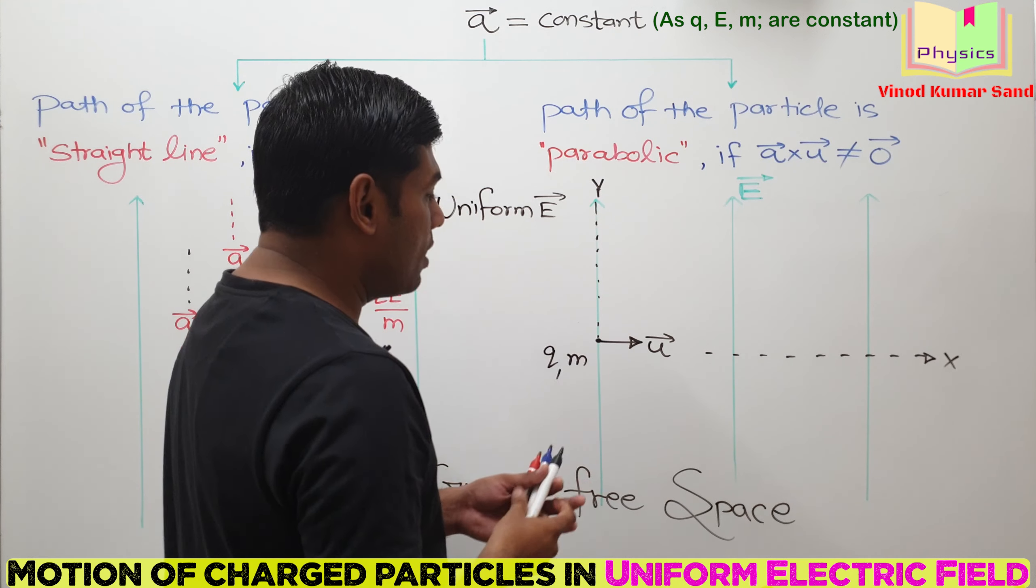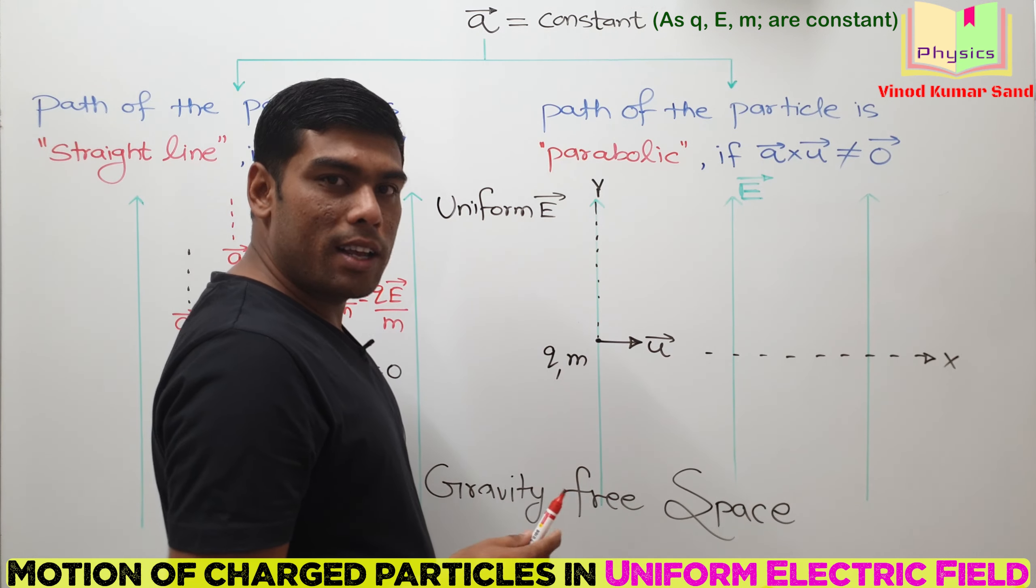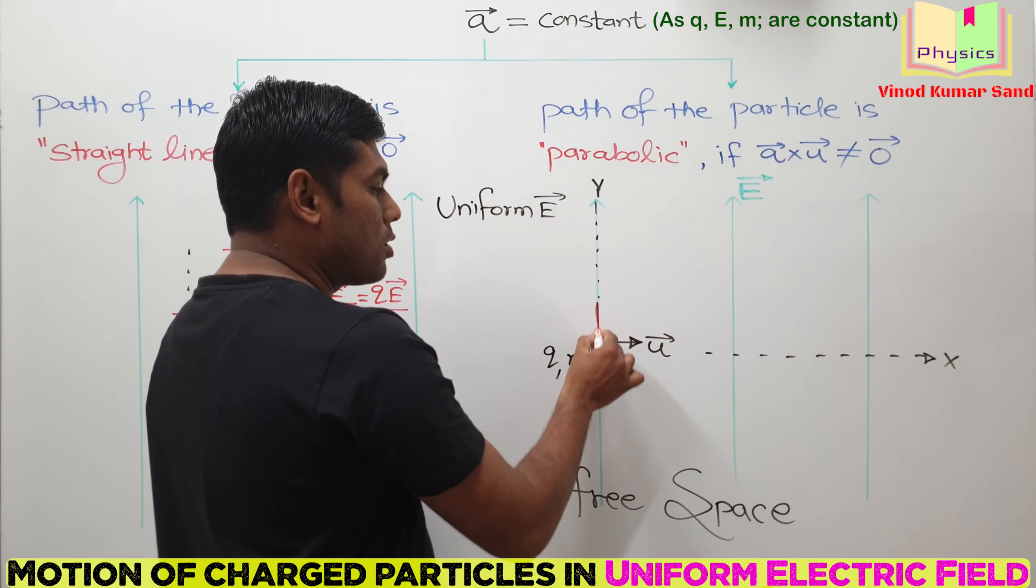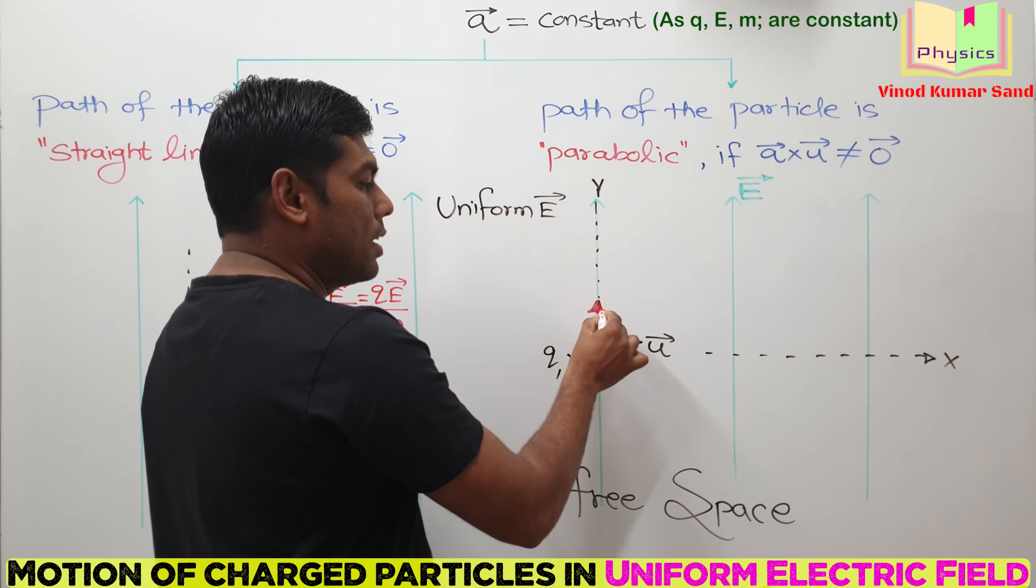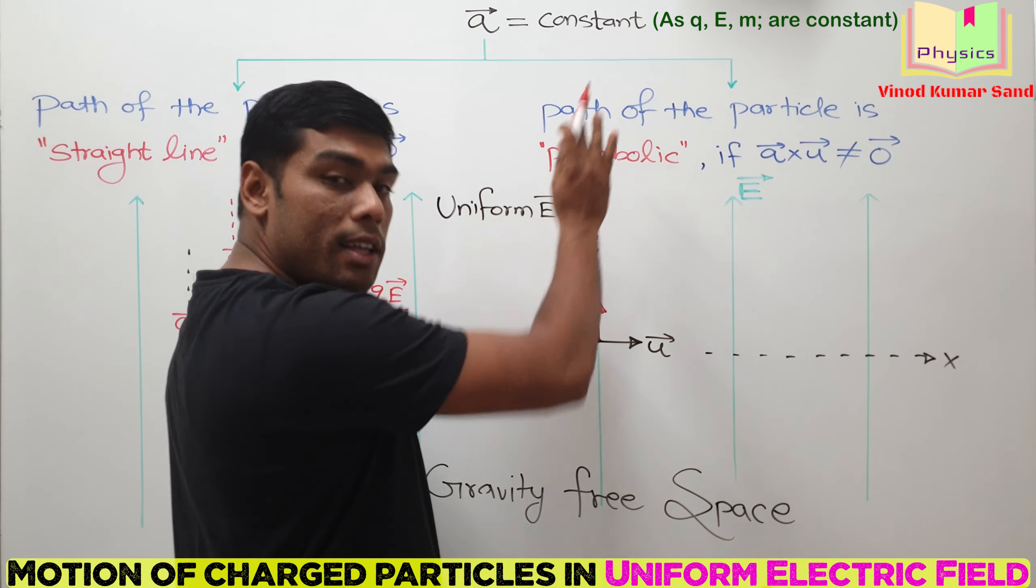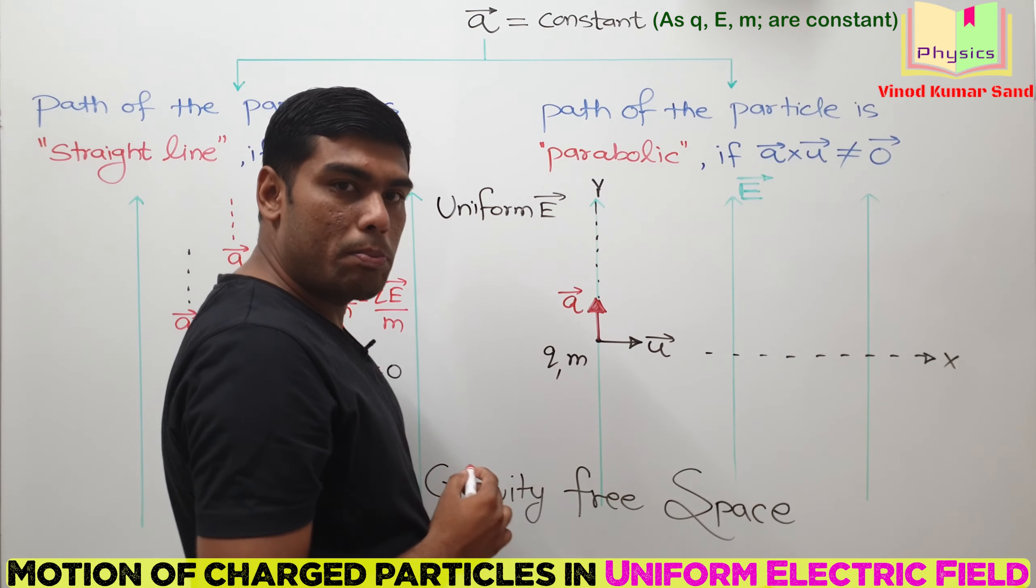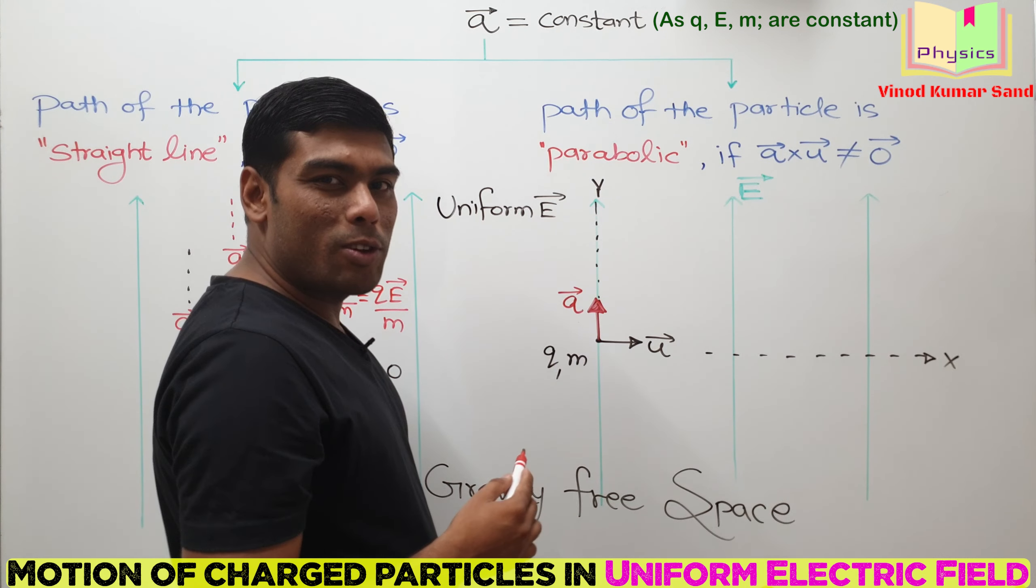Now, where is the electric force on this charged particle? You can tell directly it will be upwards because this is a positively charged particle, so it will experience the electric force along the electric field. Here is the A vector of this charged particle.